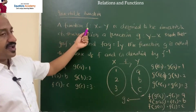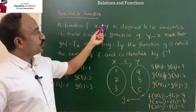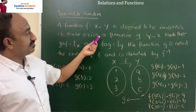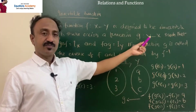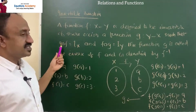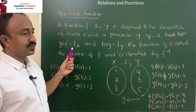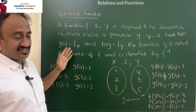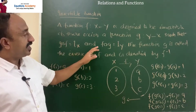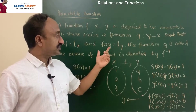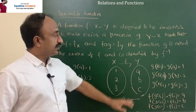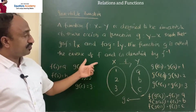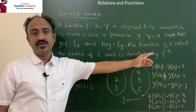A function f from X to Y is defined to be invertible if there exists a function g from Y to X such that g∘f equals I_X (the identity function on X) and f∘g equals I_Y. The function g is called the inverse of f and is denoted by f inverse.